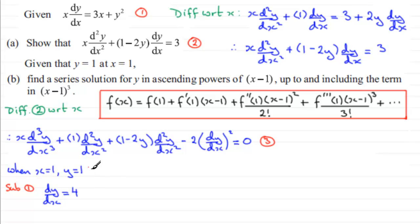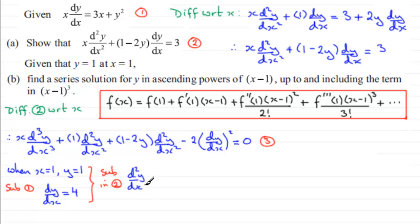Next we need d²y/dx² when x equals 1 — that is f''(1). Substituting into equation 2: 1 times d²y/dx² plus (1 minus 2 times 1) times 4 equals 3. So d²y/dx² minus 4 equals 3, giving d²y/dx² equals 7.